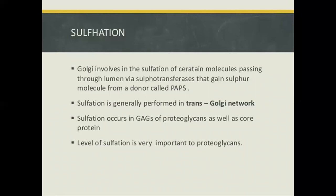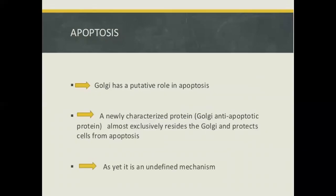Sulphation: Golgi is involved in the sulphation of certain molecules passing through the lumen via sulfotransferases, which gain sulfur molecules from a donor called PAPS. Sulphation is generally performed in the trans-Golgi network. Sulphation occurs in glycosaminoglycans (GAGs) of proteoglycans as well as glycoproteins. The level of sulphation is very important to proteoglycans.